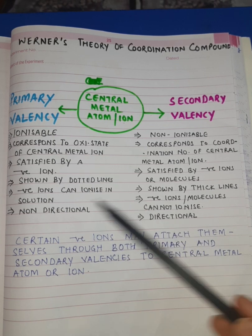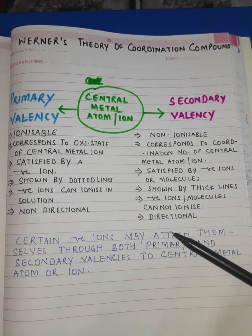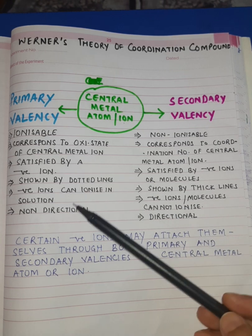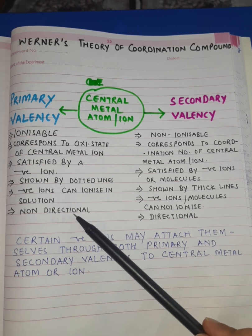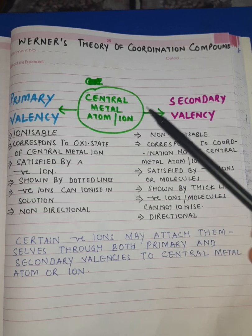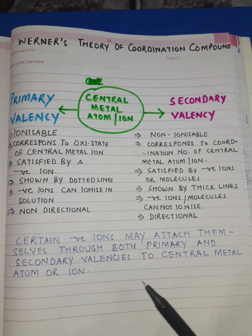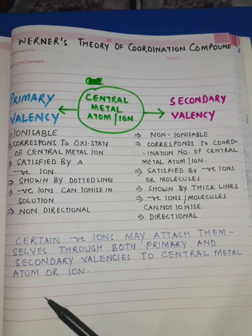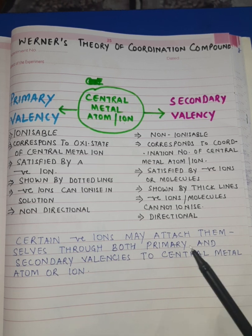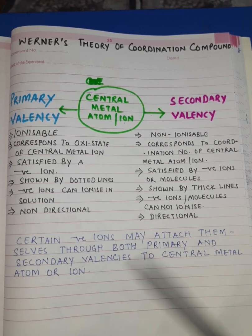The last point about primary and secondary valency is very important to understand. The directional valencies decide the geometry, and non-directional valency cannot decide the geometry. Werner also spoke about a very important concept according to which certain negative ions may attach themselves through both primary and secondary valencies to the central metal atom or ion at times of need.